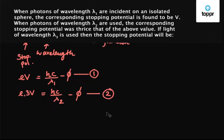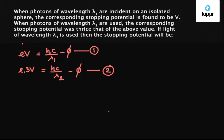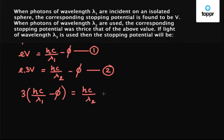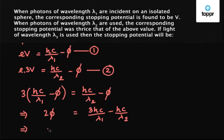Now we solve equations 1 and 2 to get the value of φ. We substitute the value of eV such that 3 × (hC/λ1 - φ) = hC/λ2 - φ, which implies 2φ = 3hC/λ1 - hC/λ2. So φ = 3hC/(2λ1) - hC/(2λ2).